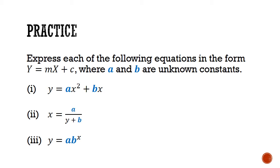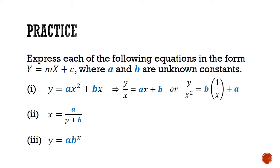For part one, we have y equals ax squared plus bx. Dividing throughout by x gives big Y of y over x, big X of x, gradient a, and big Y intercept b. For part two, rearranging through cross multiplication gives xy equals negative bx plus a. So big Y equals xy, big X equals x, gradient equals negative b, and big Y intercept equals a.